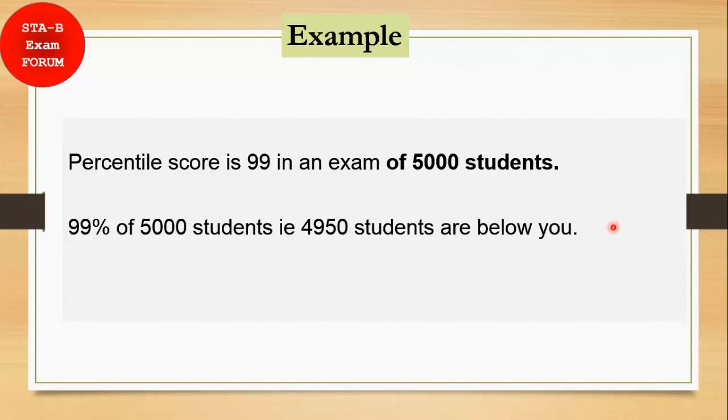It means that 99 percent of students - what is 99 percent of students? - 4950 students are below you. Whatever your rank is, 4950 students are below you, or in other words you can say you are at the 50th rank from the top. I think this example helps you to understand how percentile is calculated.